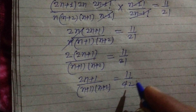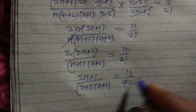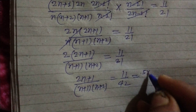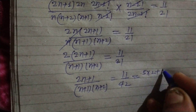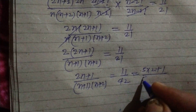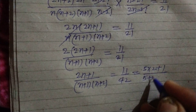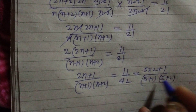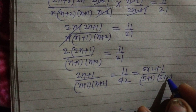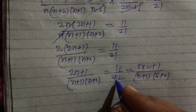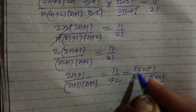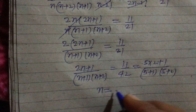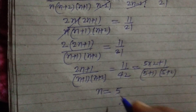Comparing both sides, we try n = 5: numerator is 2·5+1 = 11, and denominator is 5+1 = 6 and 5+2 = 7, giving 6·7 = 42. So 11/42 matches 11/42. Therefore n = 5.